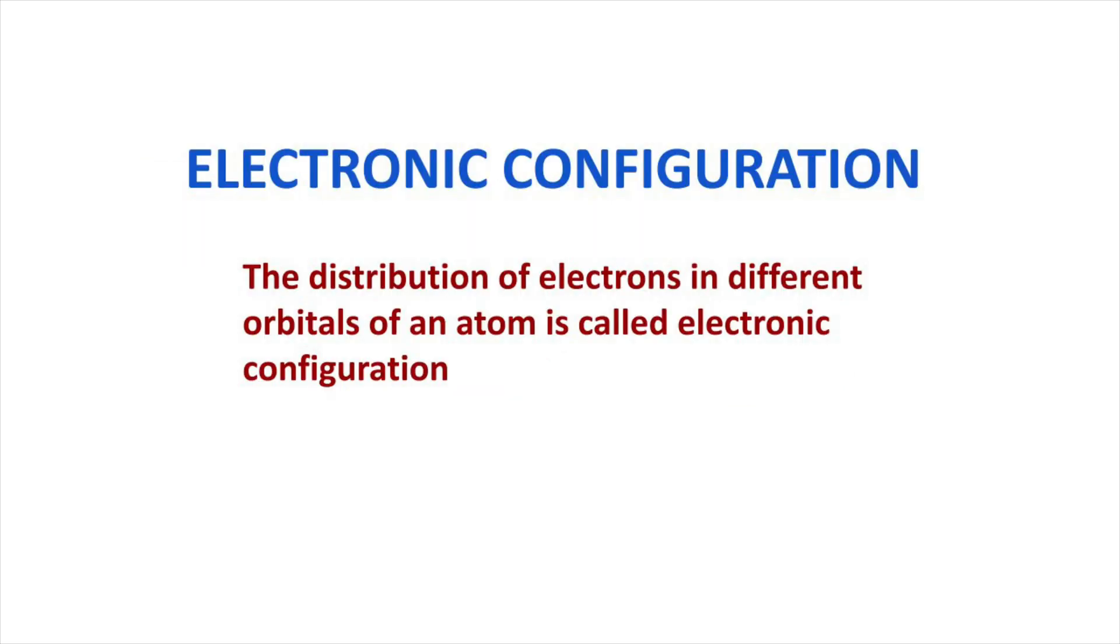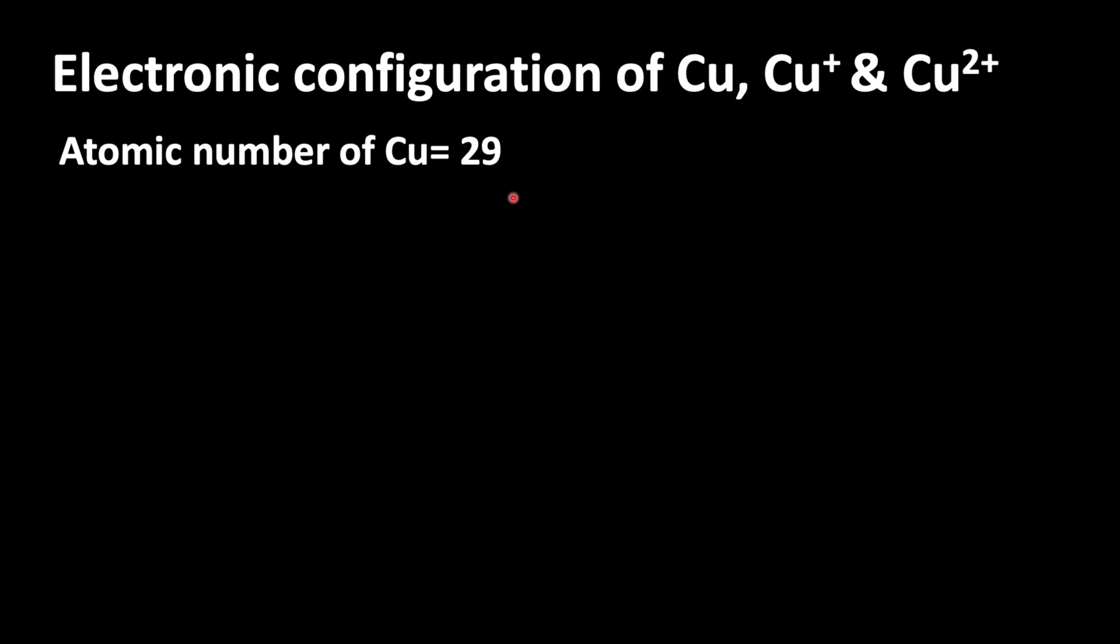The distribution of electrons in different orbitals of an atom is called electronic configuration. To write electronic configuration we should know the atomic number of copper, which is 29, from which we can write the electronic configuration.